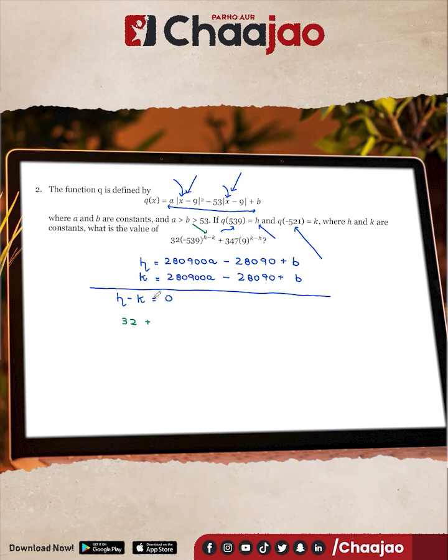If h minus k equals zero, then k minus h should also equal zero. 9 raised to the power zero is 1, and 1 times 347 is just 347. Now you're going to simplify these constants.